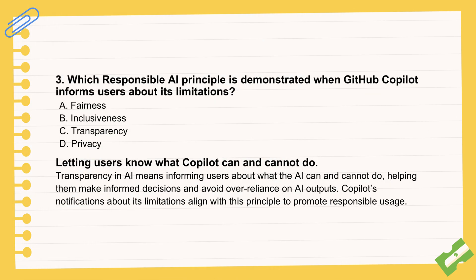Speaking of using AI well, there's this whole area of responsible AI. A big part of that is knowing the limits — not just what the tool can do, but what it can't. The exam stresses this with the principle of transparency. It means being clear with users about how the AI works and admitting its limitations. When Copilot is honest about what it can and can't handle well, it helps manage expectations. Users trust it more because they know it's not pretending to be perfect. It's about giving users the full picture so they can use the tool effectively and responsibly.